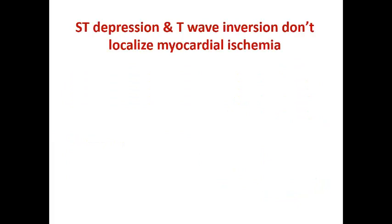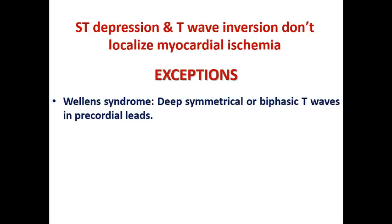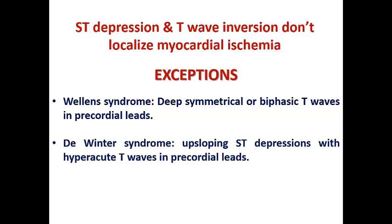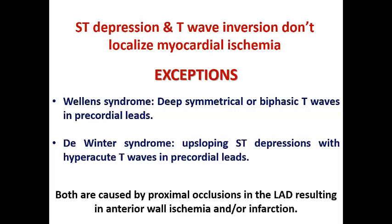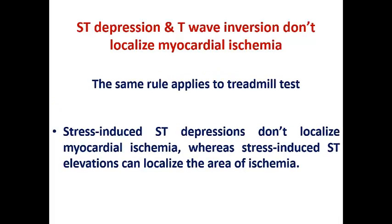ST depression and T wave inversion don't localize myocardial ischemia, with two exceptions: Wellens syndrome, where deep symmetrical or biphasic T waves in precordial leads localize the lesion to subtotal or total LAD occlusion, and DeWinter syndrome, which shows upsloping ST depression with hyperacute T waves in precordial leads, both indicating proximal LAD occlusion. This rule also applies to the treadmill test — stress-induced ST depression does not localize myocardial ischemia, whereas stress-induced ST elevation can localize the area of ischemia.